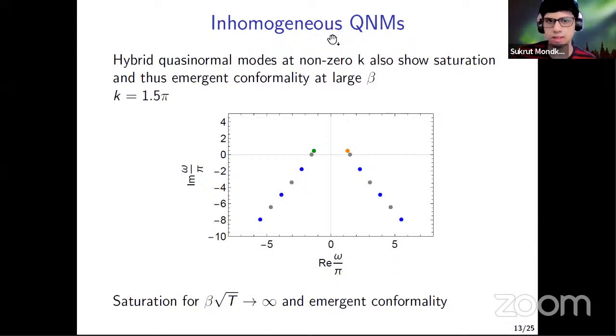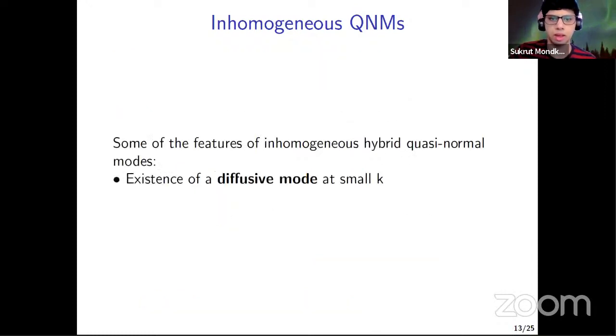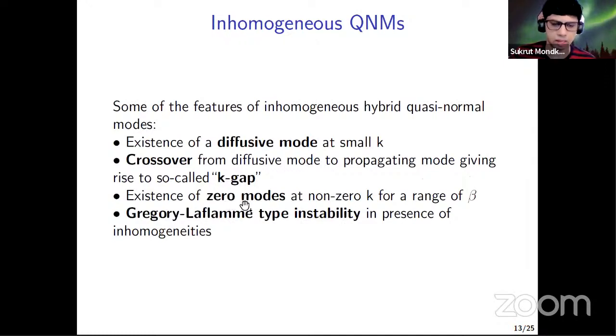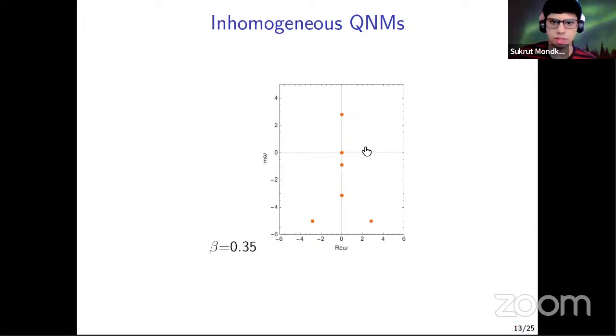Yeah. So now I will describe the final section, the quasi-normal modes in the presence of inhomogeneities. So firstly, there's also an emergent conformality just like for k equal to zero I showed earlier at large beta. Now there is a diffusive mode at small k. And as one increases the value of k, then this diffusive mode collides with the quasi-hydro mode that I showed earlier. And both become propagating mode. And both the modes are the branches of the same dispersion relation, a k-gap dispersion relation, which is found ubiquitously in many different areas of physics. Then there exists a zero mode at non-zero k in this model. And it gives rise to instability, which is reminiscent of Gregory-Laflamme instability of the black strings in higher dimension. So I will describe all these points with just one animation.